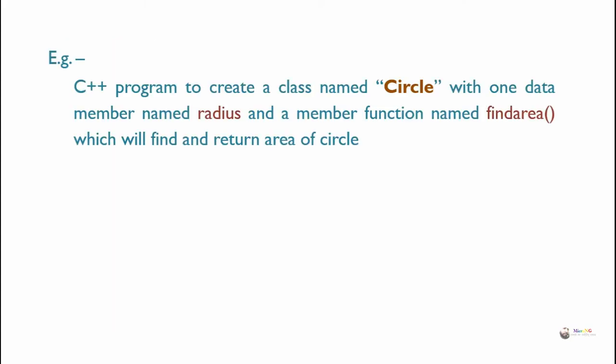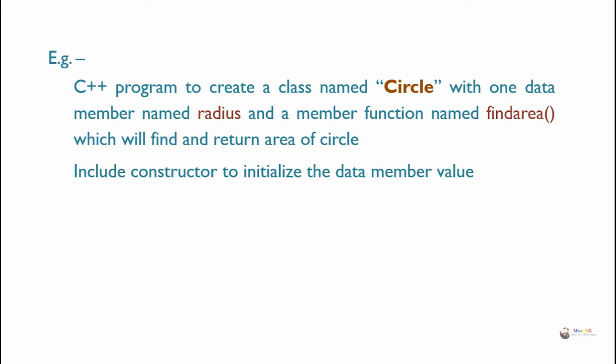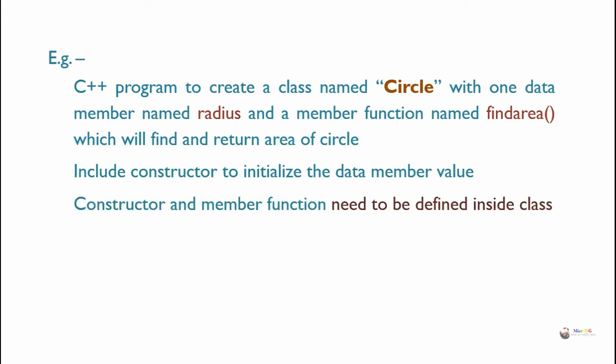Example: a C++ program to create a class named Circle with one data member named radius and a member function named find_area which will find and return the area of a circle. Include a constructor to initialize the data member value. Both the constructor and the find_area method need to be defined inside the class.